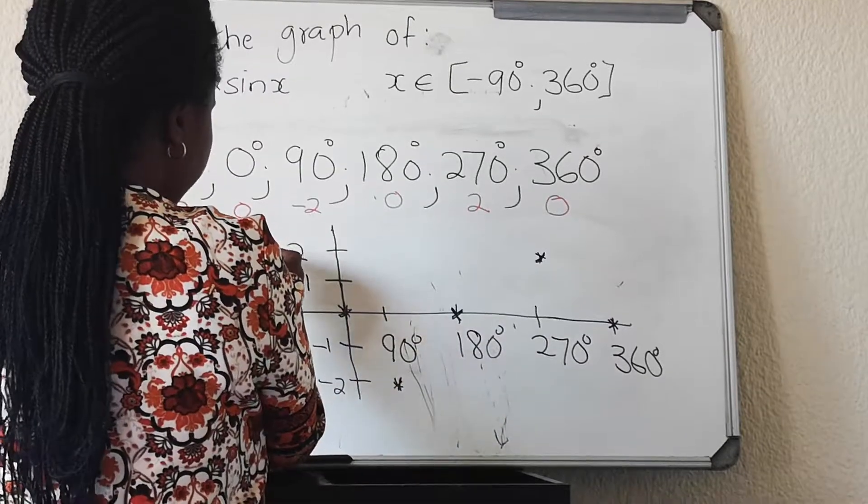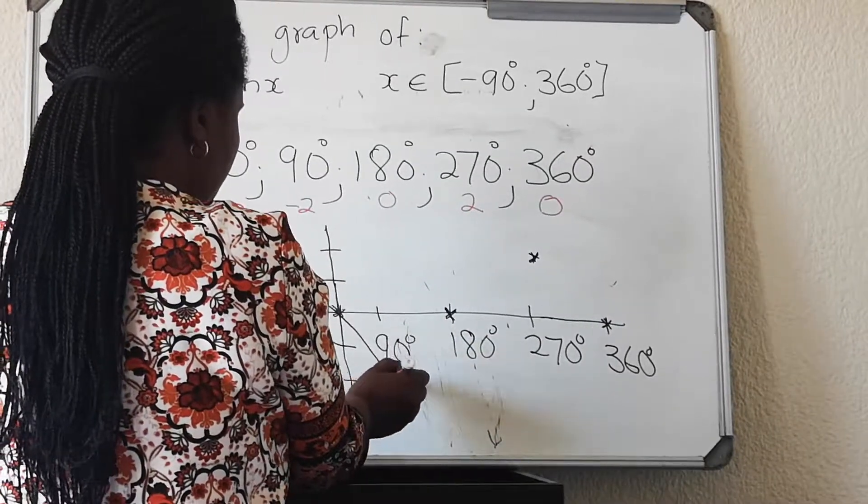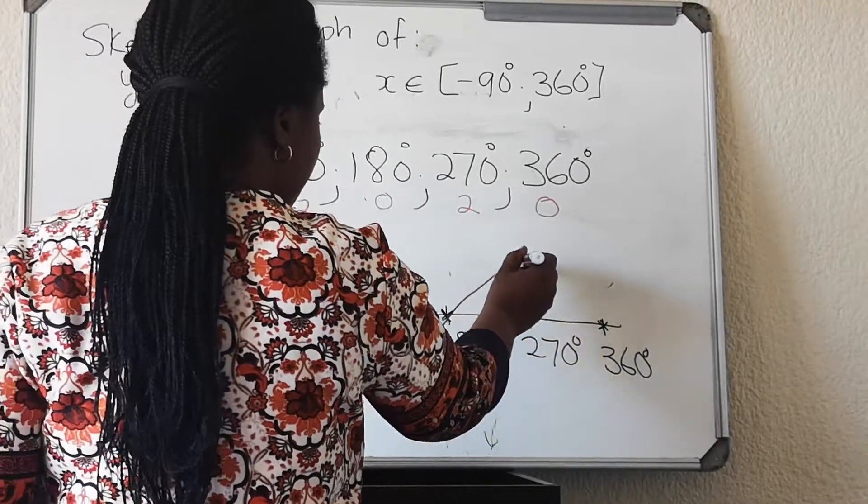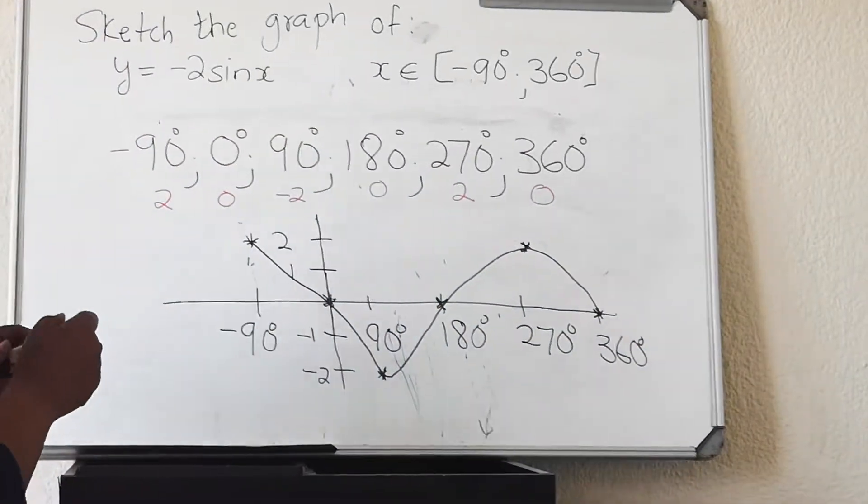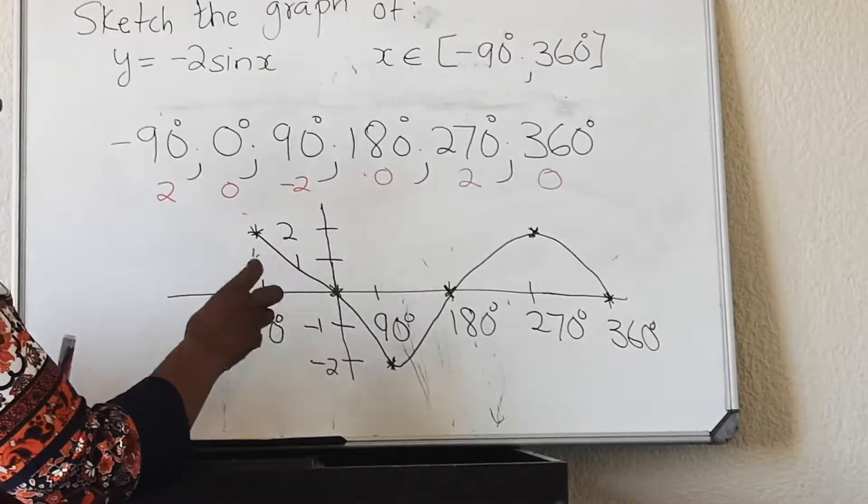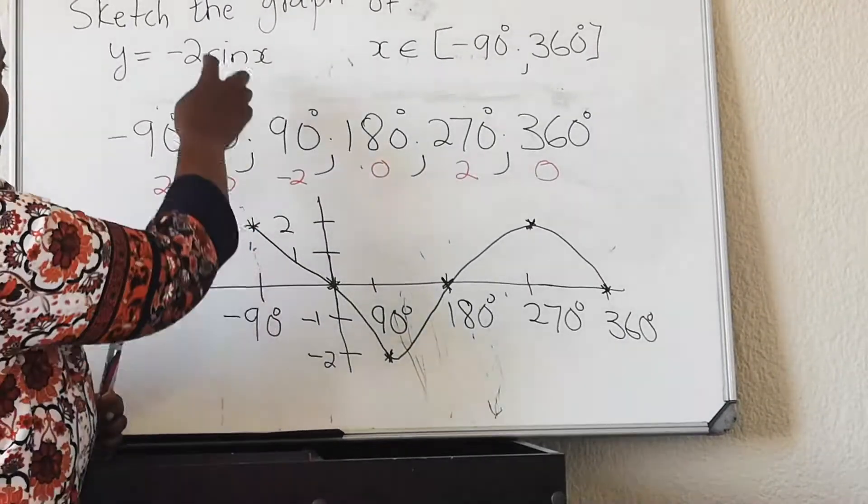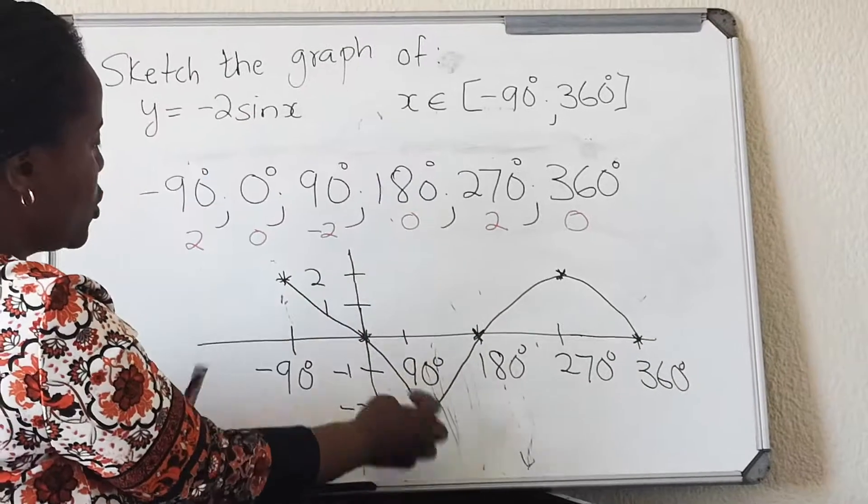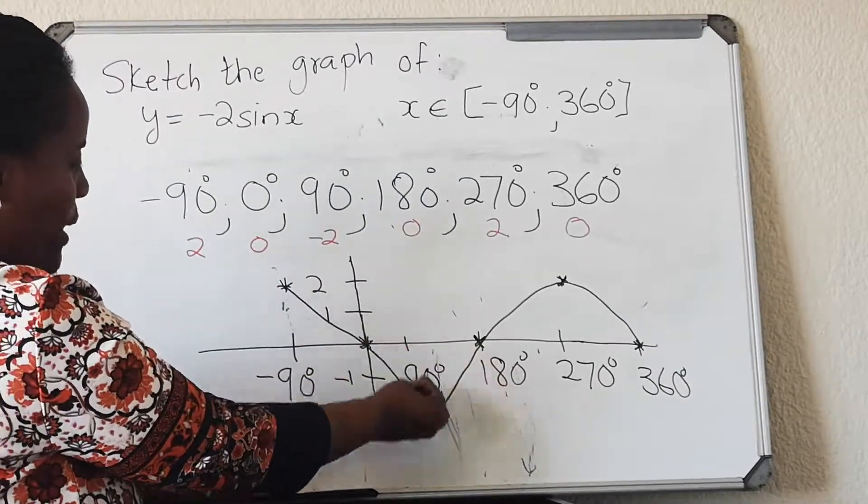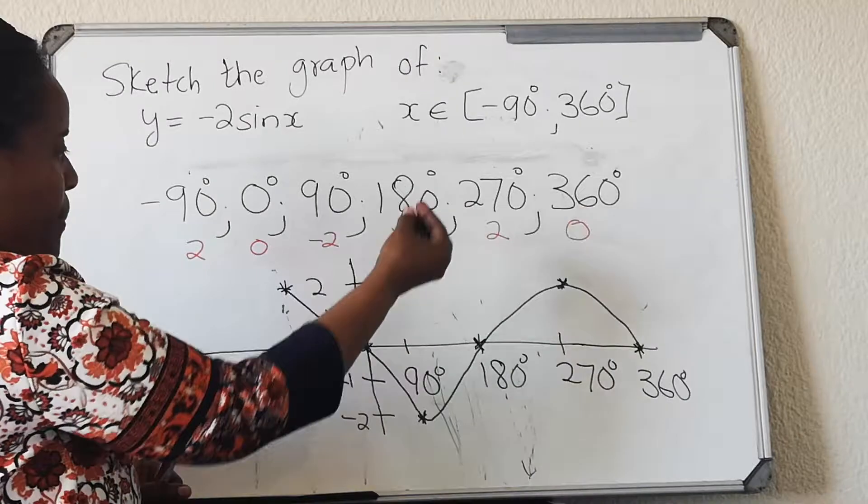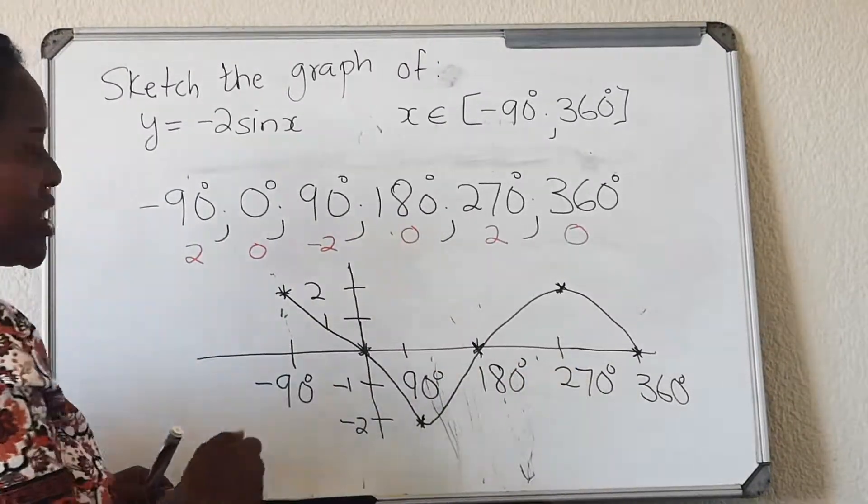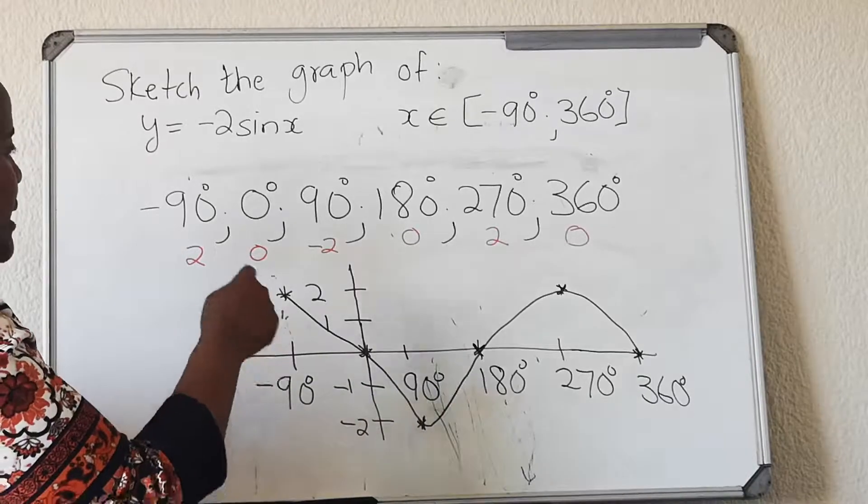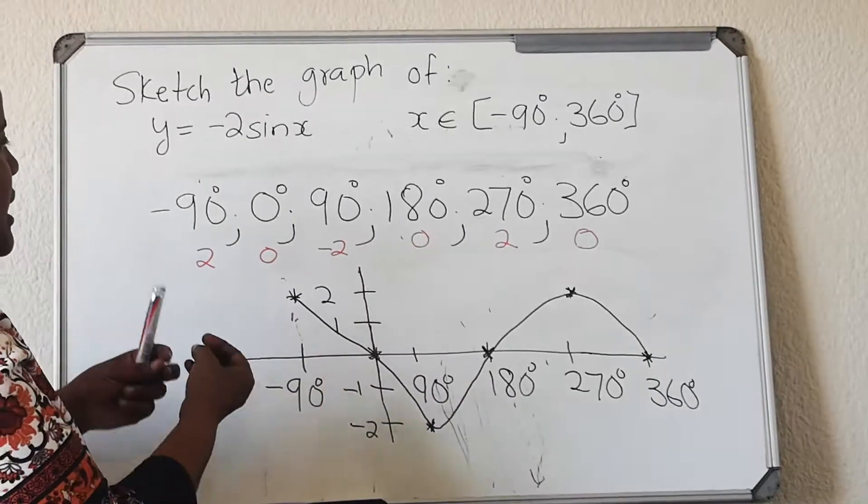So my function started here, went down there, went up there. When you look at this function compared to the original function, the amplitude just stretched. The original one is that one, it just went 2 up. Only the turning point changed. The intercept didn't change. So the amplitude affects the turning point. It stretches the graph. If it was a fraction there, you would have compressed it.